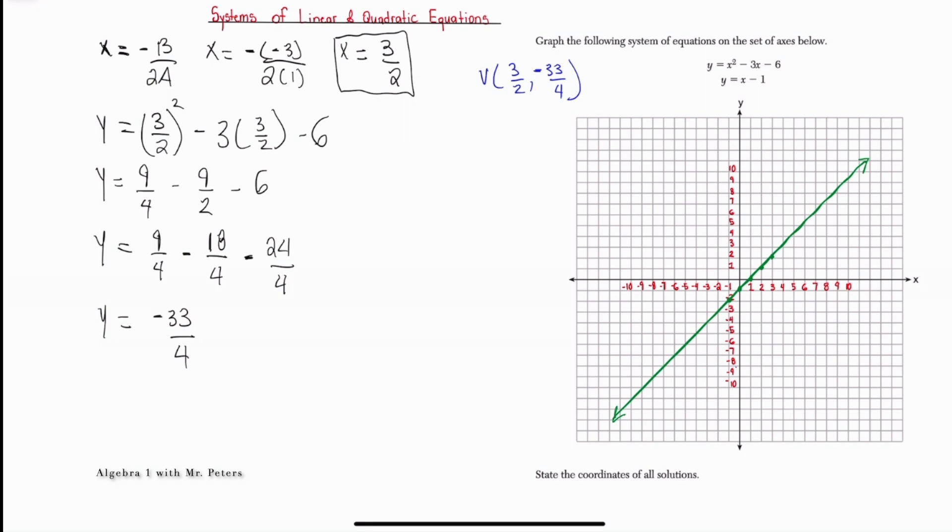So when we go over to our coordinate plane and we plot that, the vertex is going to be right here at 1.5 by negative 8 and 1.4, which would be about right here. Now, what we could do is we could find other points for the parabola.